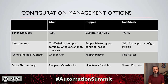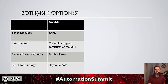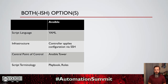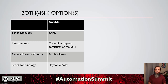If you're still with me, you're probably thinking I missed one — and that's because it really fits into the both-ish area: Red Hat's Ansible. Ansible has a wide variety of capabilities; it can provision things, it can apply configuration management. When writing Ansible configurations, we use YAML. An Ansible controller applies the configuration, and the big thing for Ansible is that it generally uses SSH or WinRM — no agents to install on these systems. The central point of control is Ansible Tower, and the script terminology is playbooks and roles.